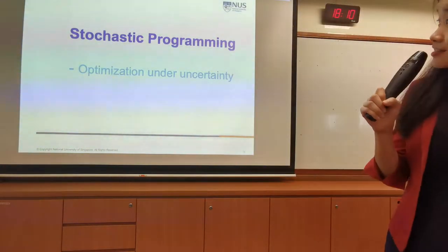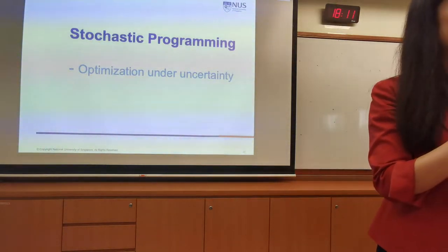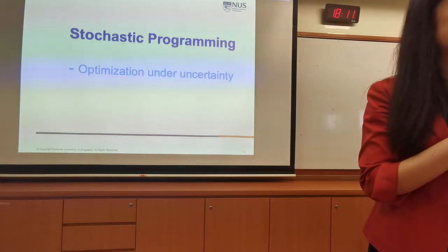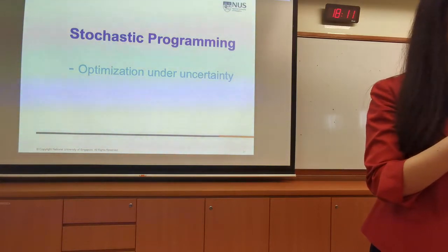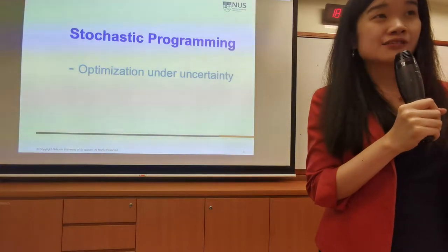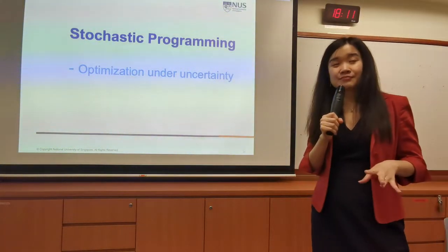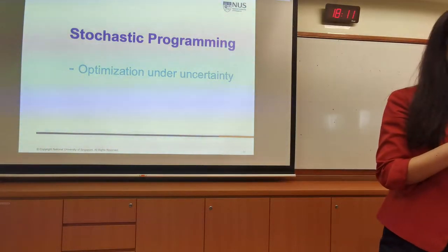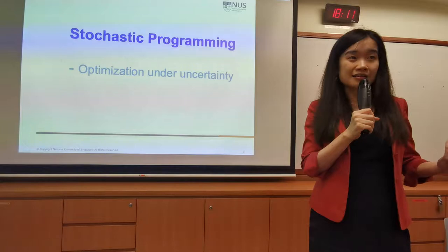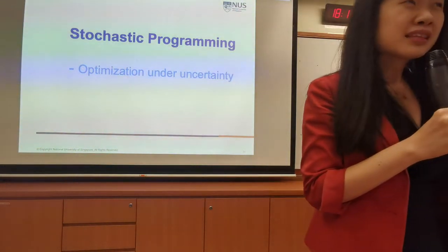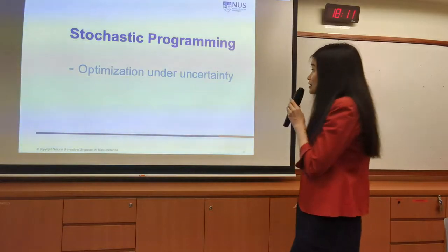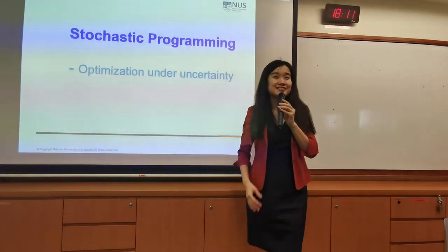Stochastic programming is a very large branch under optimization because there are a lot of uncertainties in the real world. So far we have been doing deterministic work — if we define a parameter as 2, then it is 2. But in most real-world cases, costs, demands, and parameters will not be at a fixed level. Those uncertainties cause us to consider many additional dimensions.